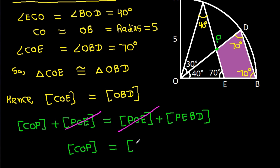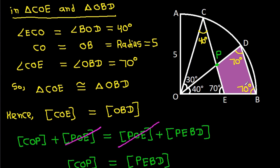This means area of triangle COE equals area of region PEBD. So if this area is A, then this area is also A.